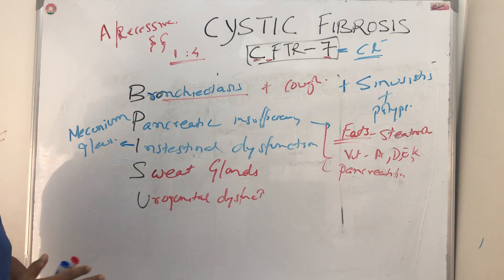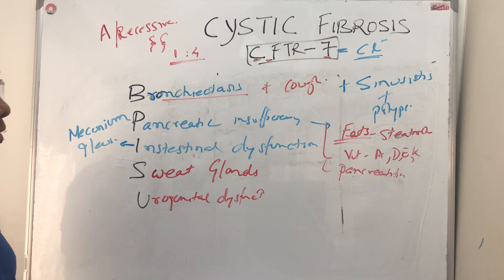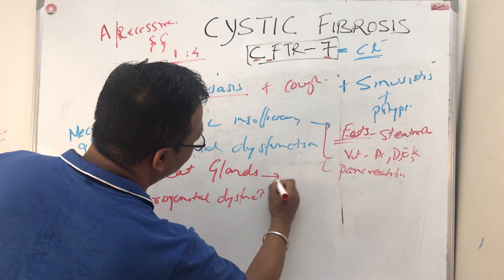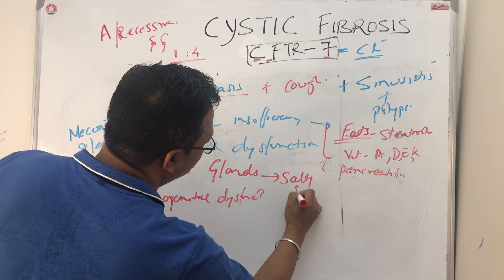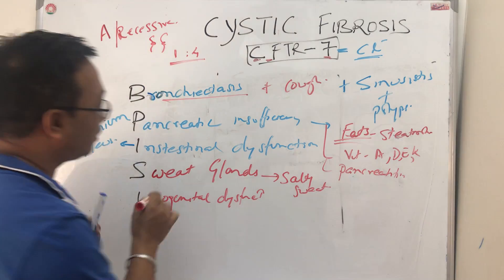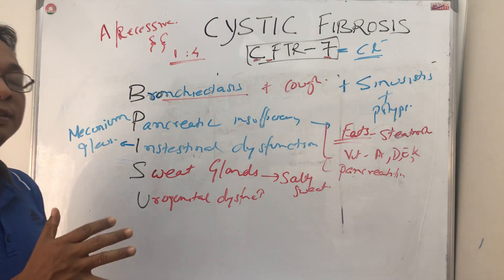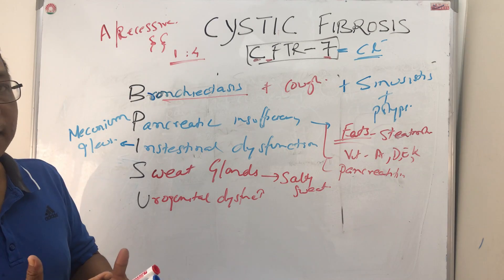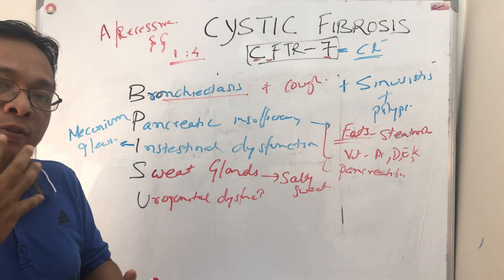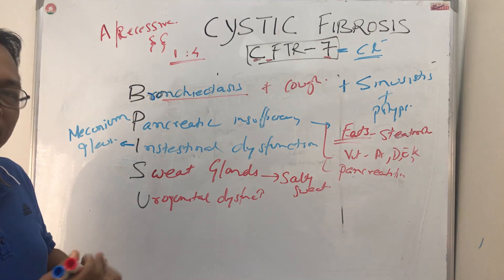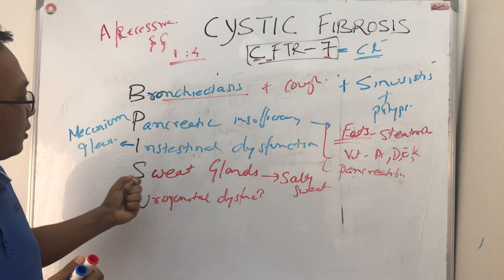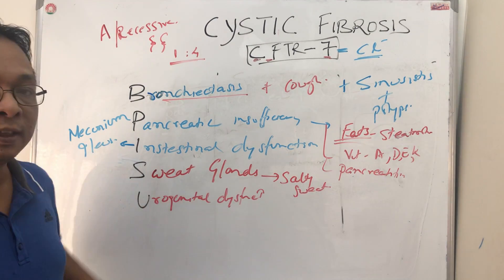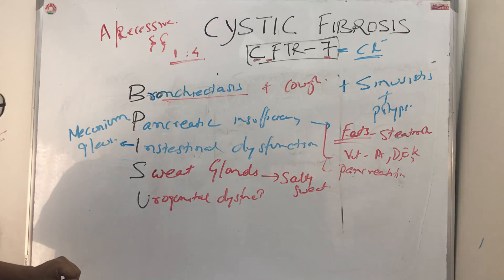S for Sweat glands — because of increased loss of sodium and chloride, there is salty sweat. Often cystic fibrosis is first alarmed or noticed by the mother who, when she tries to kiss her baby, finds it a little bit salty. That is when she takes the baby to the physician. So because of increased secretion of sodium and chloride, you have salty sweat.